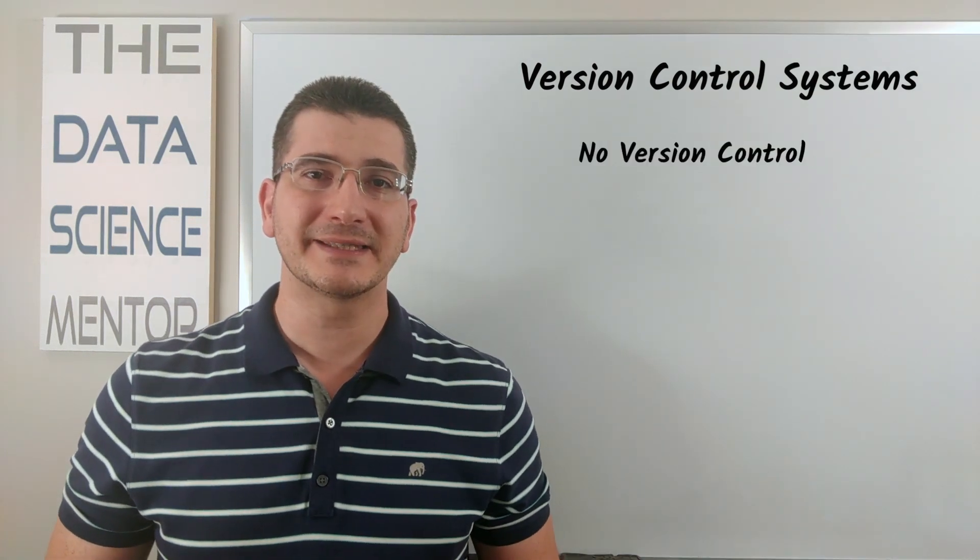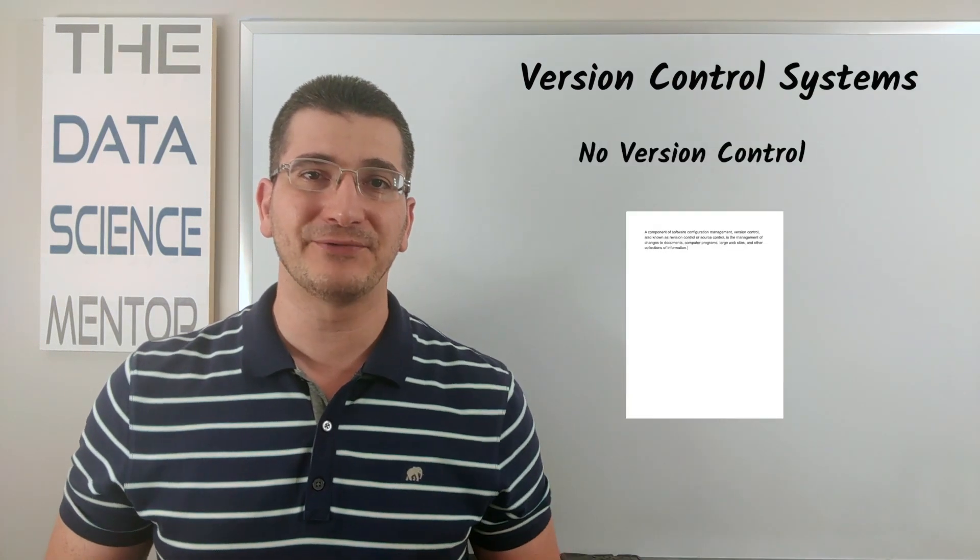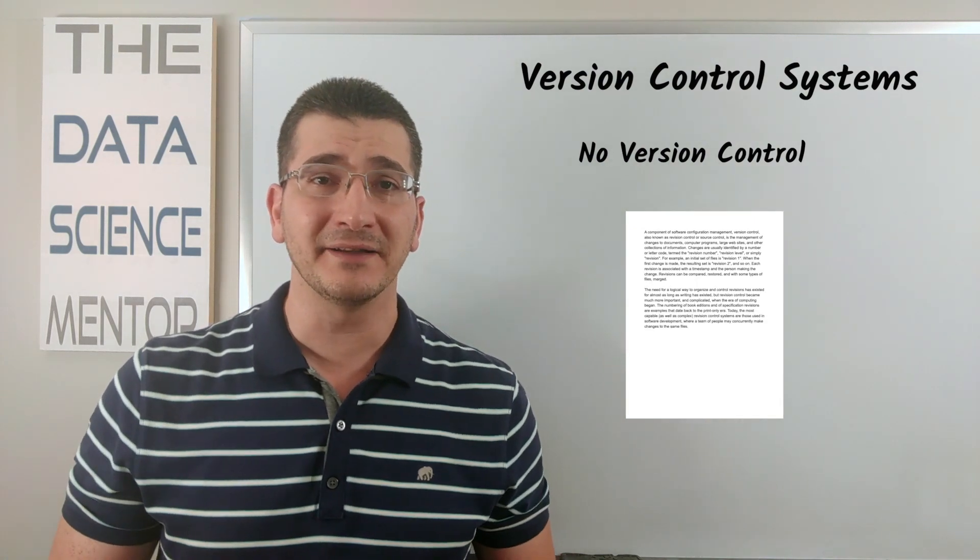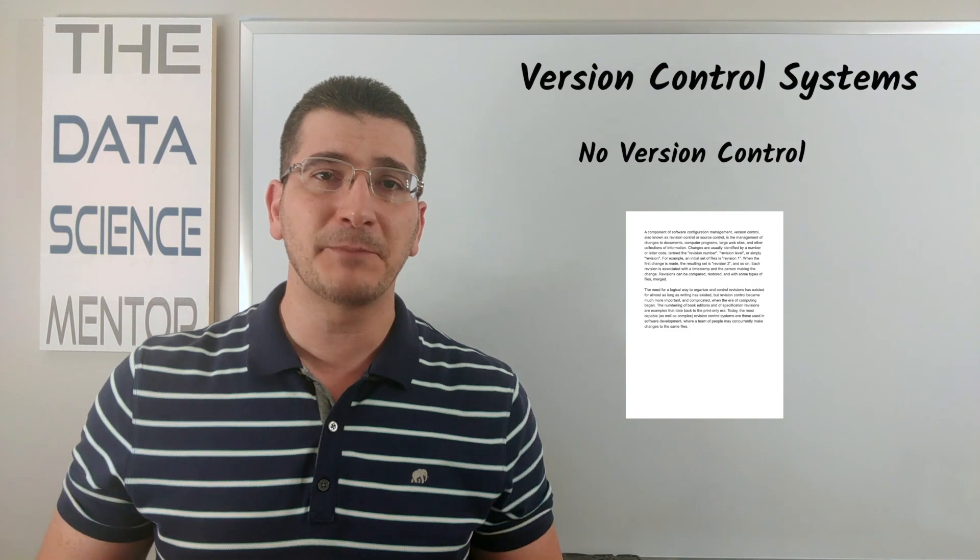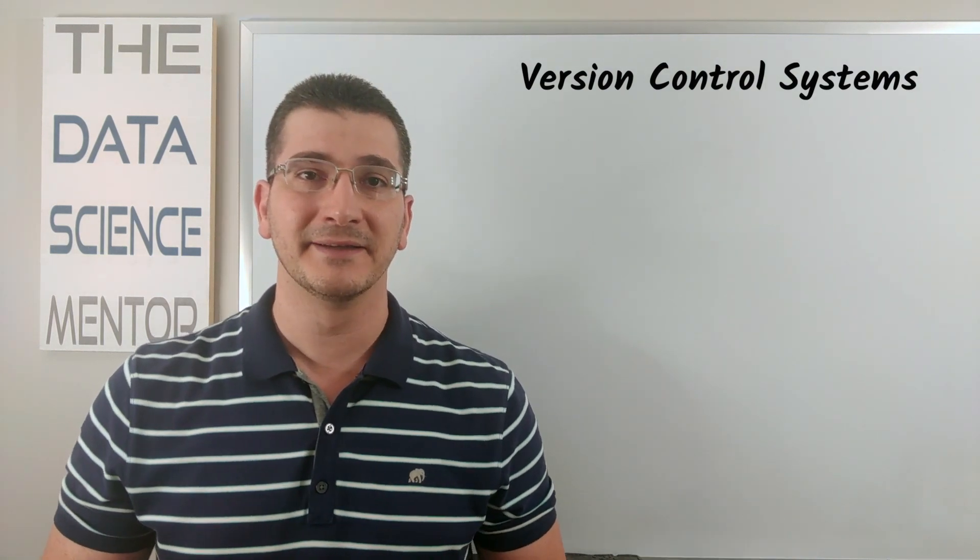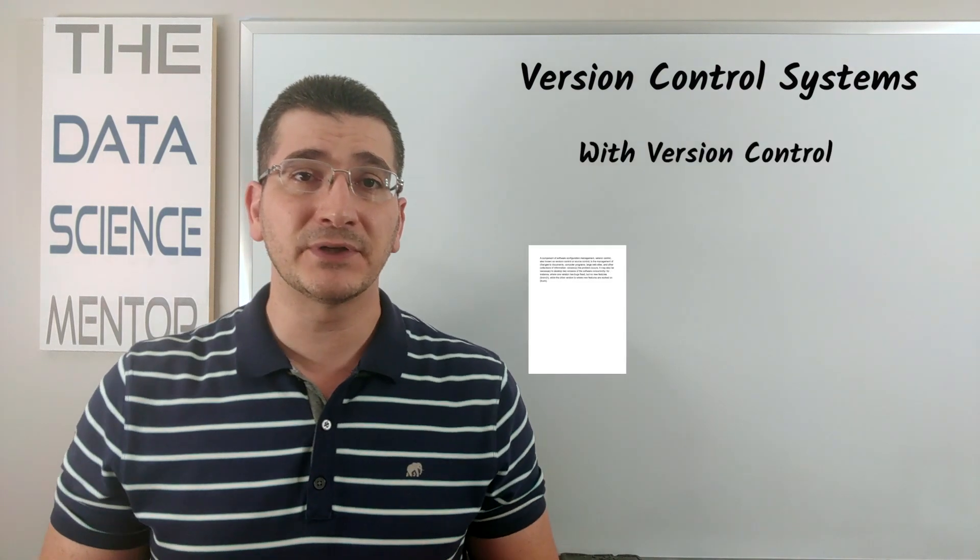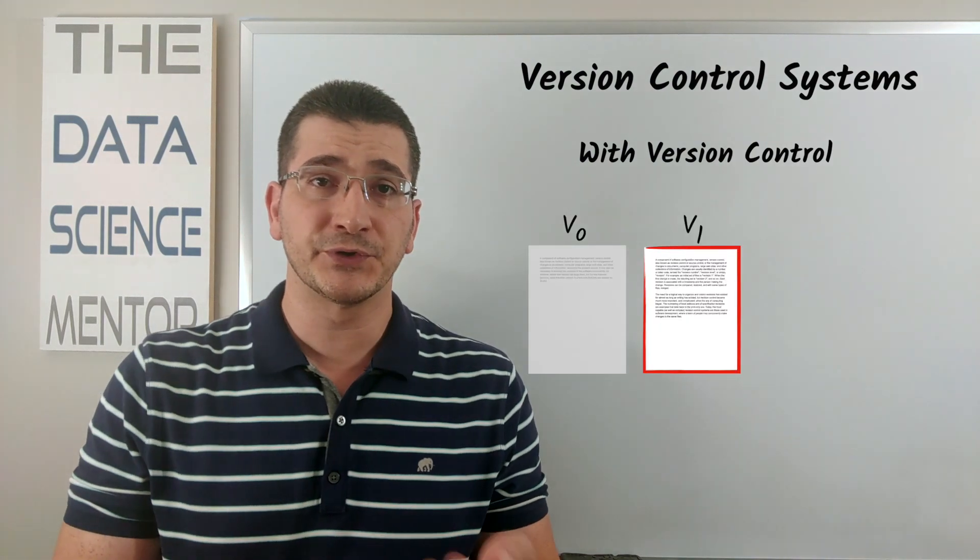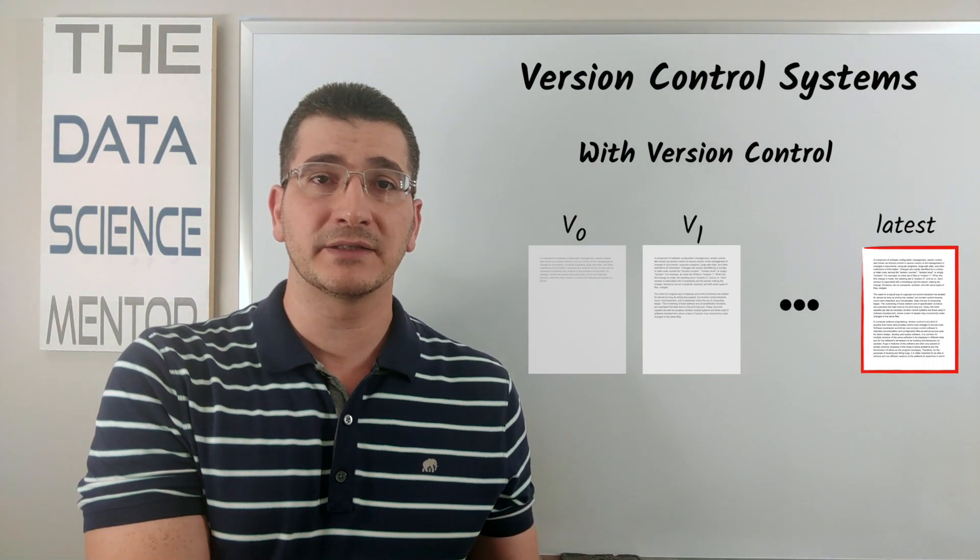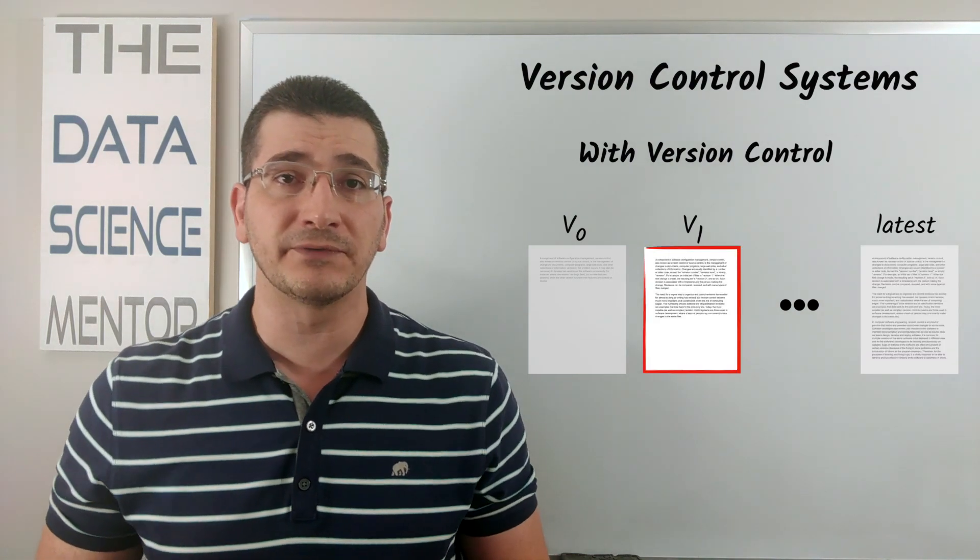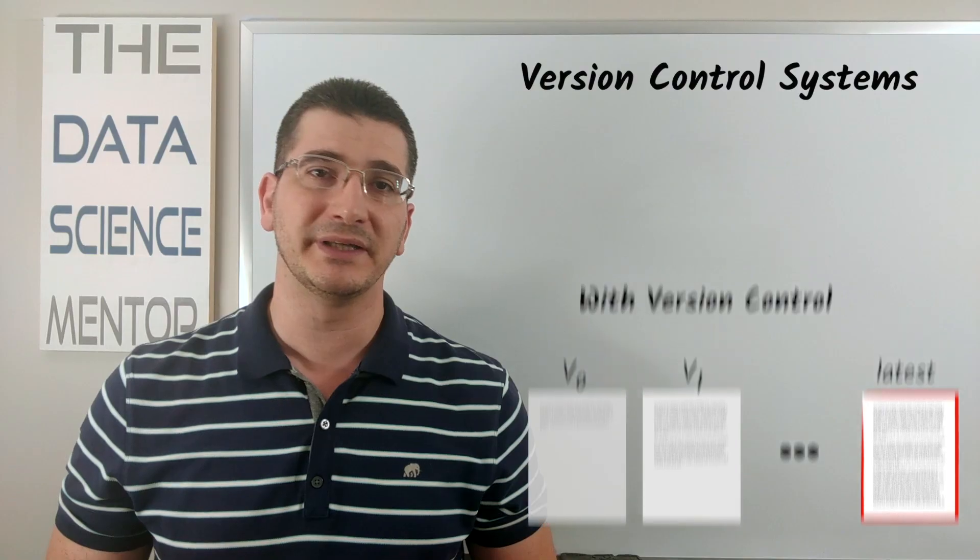Now without a version control system, every time you change a file, you overwrite the older state or version of the file and therefore it becomes impossible to retrieve the older version. With a version control system, on the other hand, you save different versions of the file as you're working on it, creating version zero, version one, all the way to the latest version, and this allows you to retrieve an older version of the file in case you ever need to.